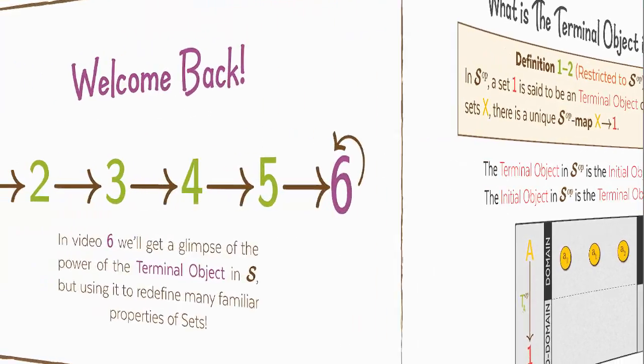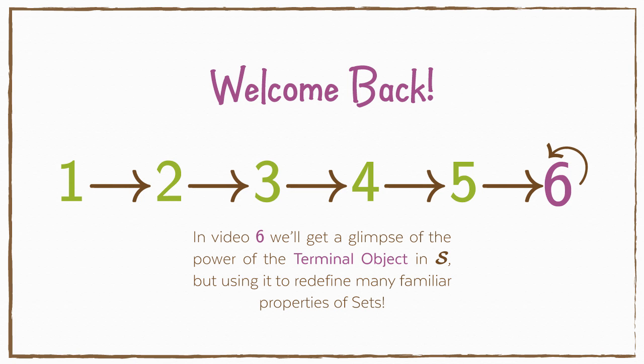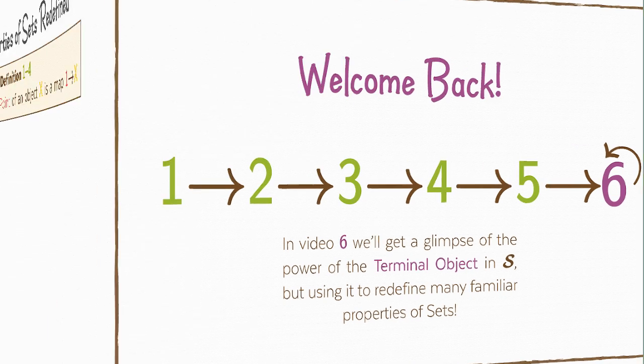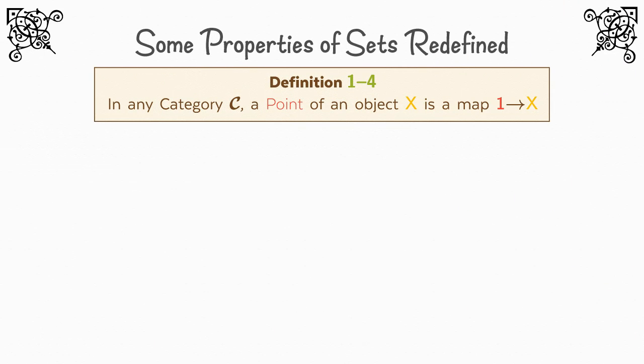Today we will take a closer look at the terminal object in S. I will give you a glimpse of how it will make your life easier in the future, both in understanding concepts in the theory and improving them. Definition 1-4: In any category C, a point of an object X is a map 1 to X.